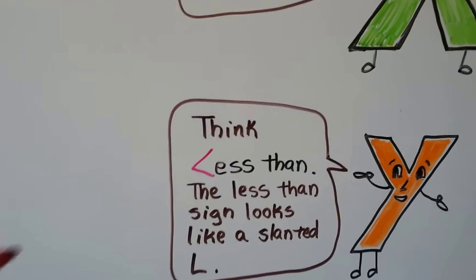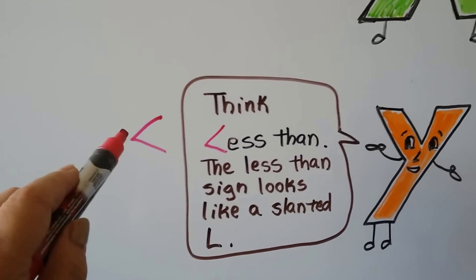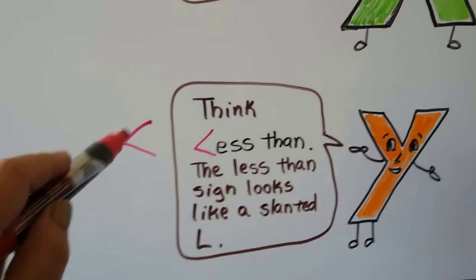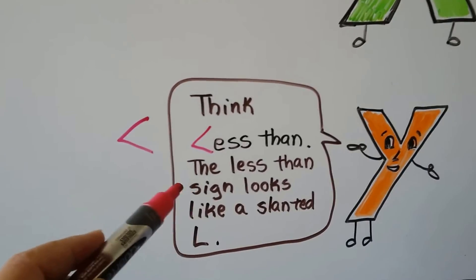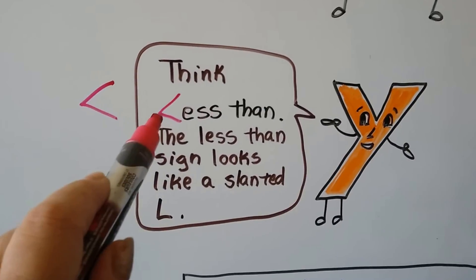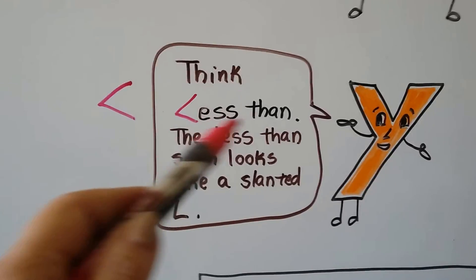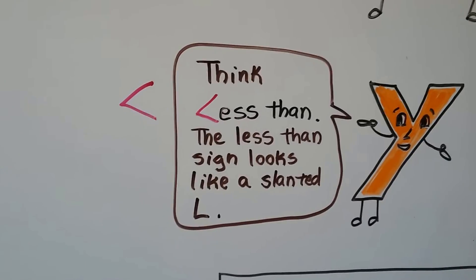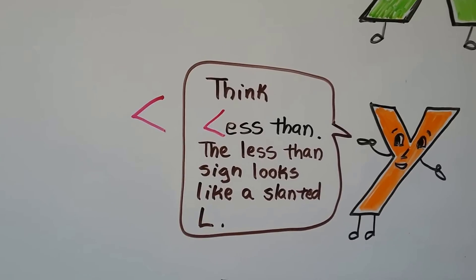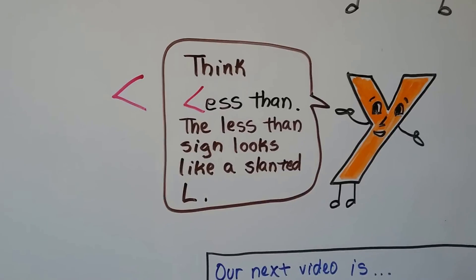Now you should be ready to do the GED skill focus on page 37. To remember which symbol is less than versus greater than: the less than symbol kind of looks like a slanted L. If you turn it, you can almost write 'less than' with it — it looks like an L. So you know that's the less than symbol. And just remember that the big mouth always faces the big number.